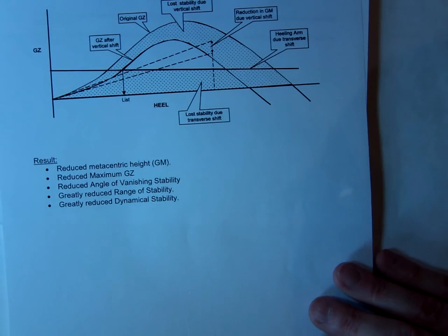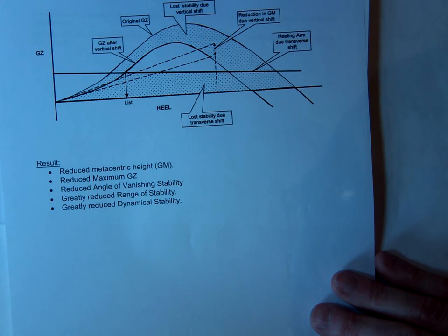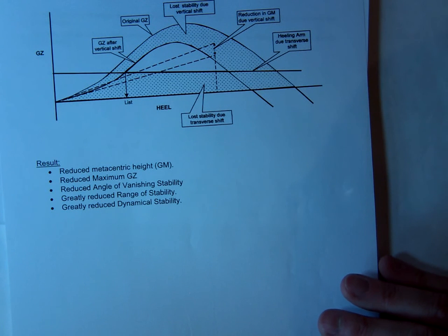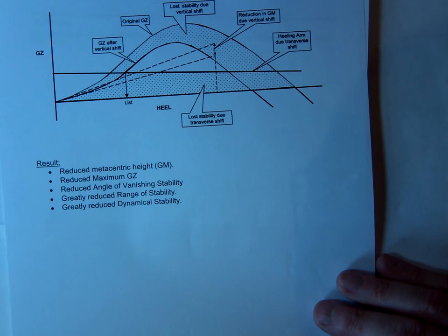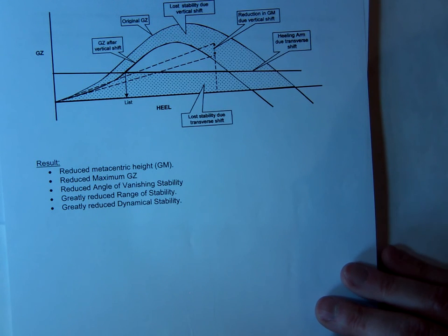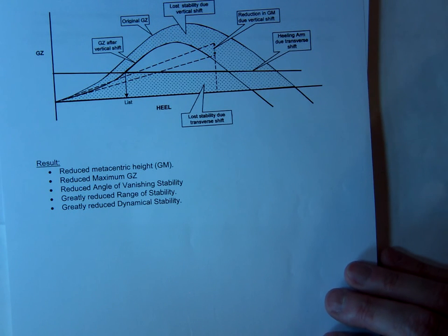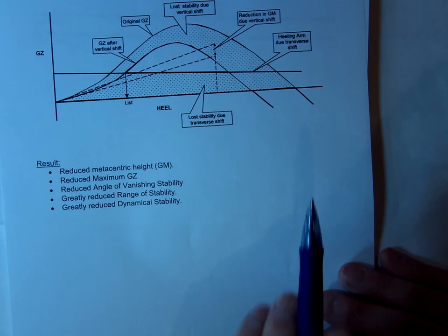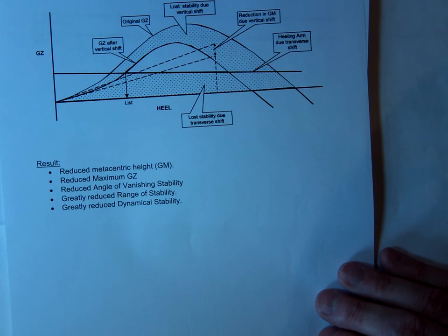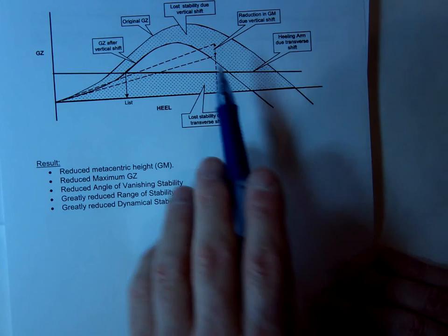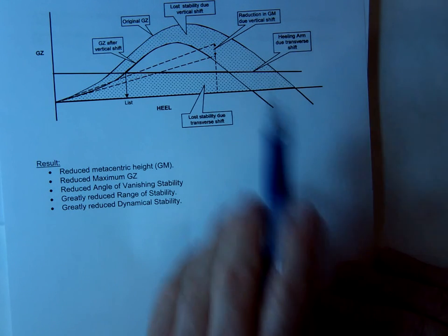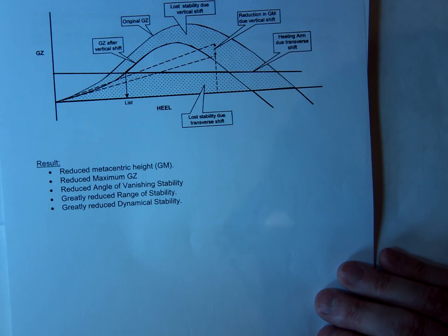So when we have ice accretion on deck, you must remember the two important factors. GM is reduced. It's non-symmetrical, therefore, you're going to have an angle of list. So you have two lots of lost dynamic stability to show on the GZ curve. And when you label it, make sure that you show the examiner that you understand how you've lost the various values on the GZ curve.